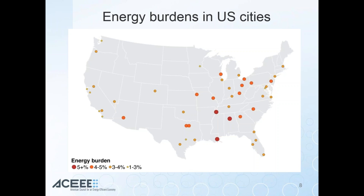We mapped energy burden magnitude for each city based on metro area average and found energy burden tends to be higher in cities compared to states. We focused on cities because they have higher concentrations of poverty and minority communities, though rural communities also experience poverty and high energy burden and deserve more research. The cities with highest median energy burdens are Memphis, Birmingham, New Orleans, Atlanta, and Providence. Higher energy burdens are concentrated in the Southeast and Midwest.